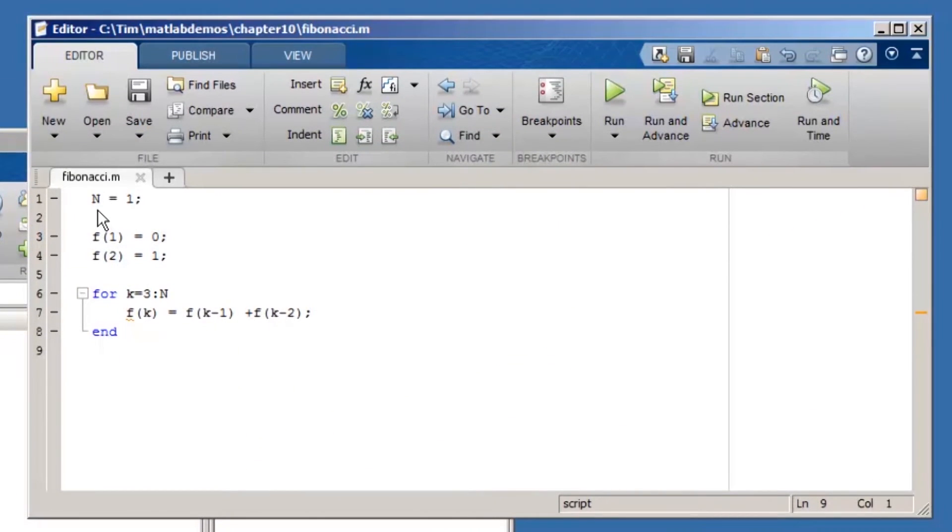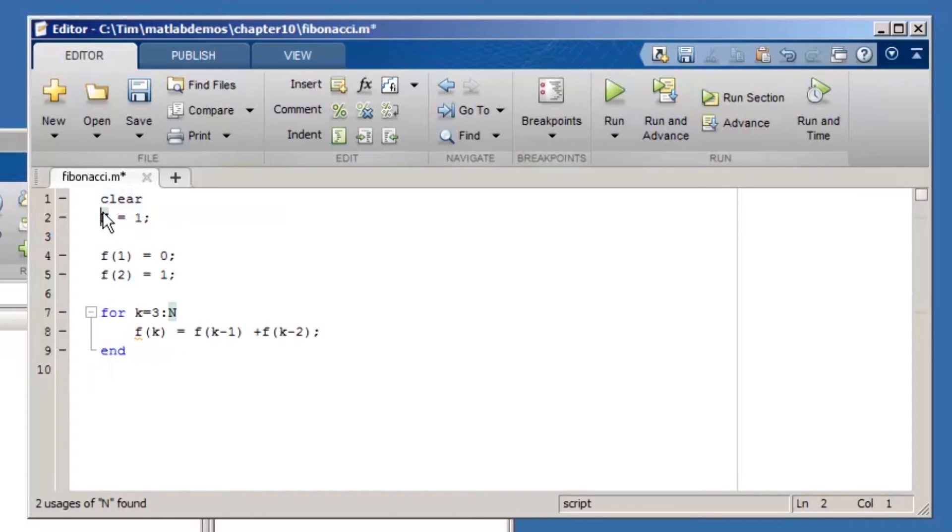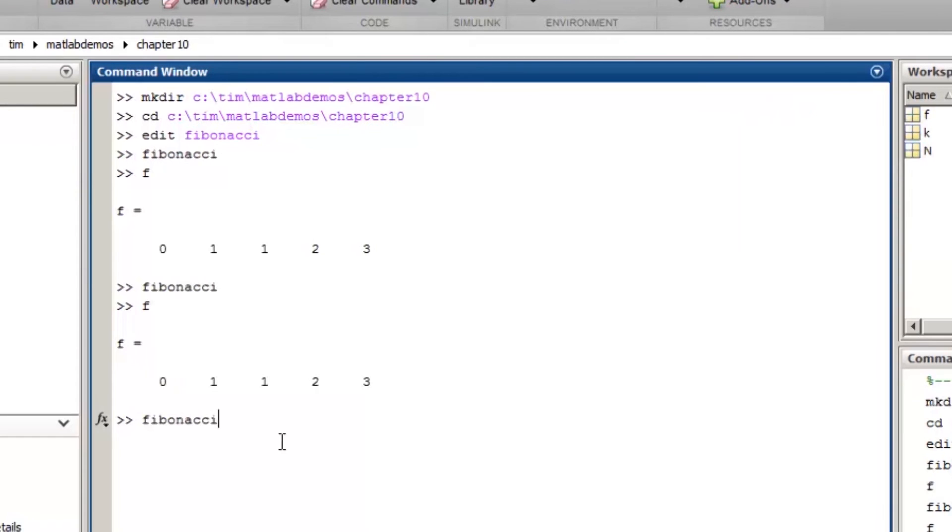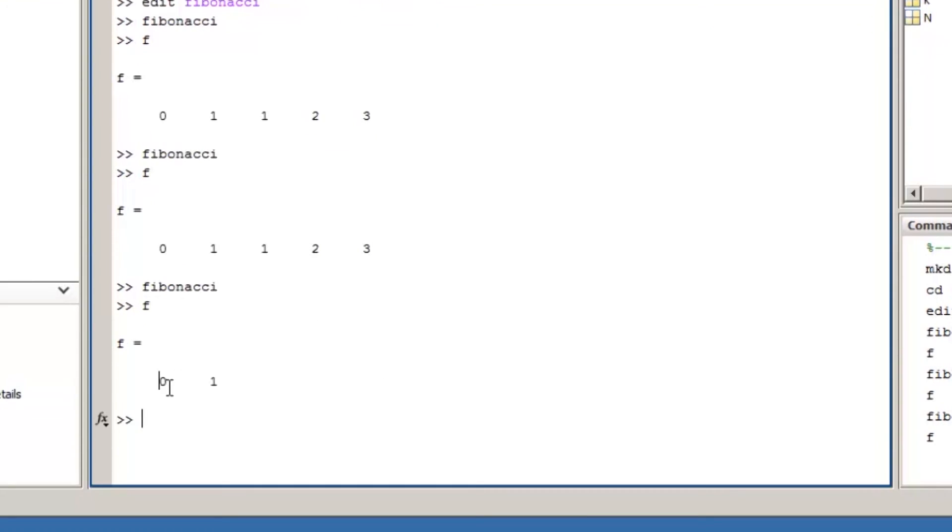So I'll add a clear statement to my file. Now when I rerun the file and display the results, I still get kind of a strange result. Even though I only want one term in the series, I get two since there isn't any logic that keeps me from initializing the first two elements of the series.